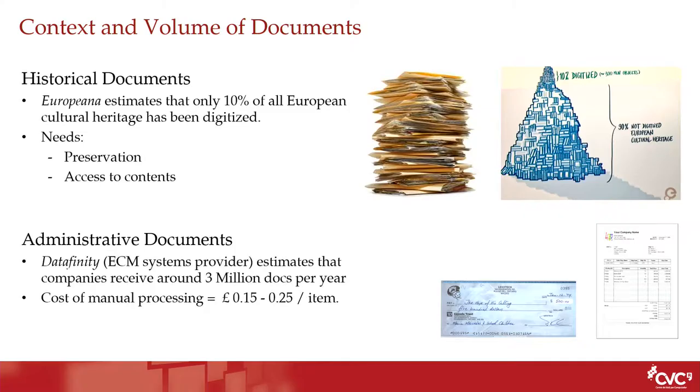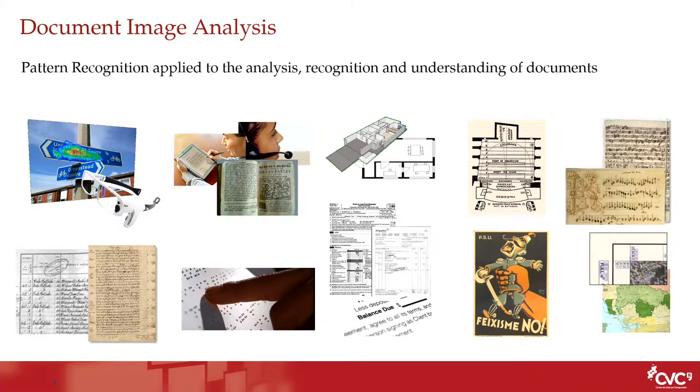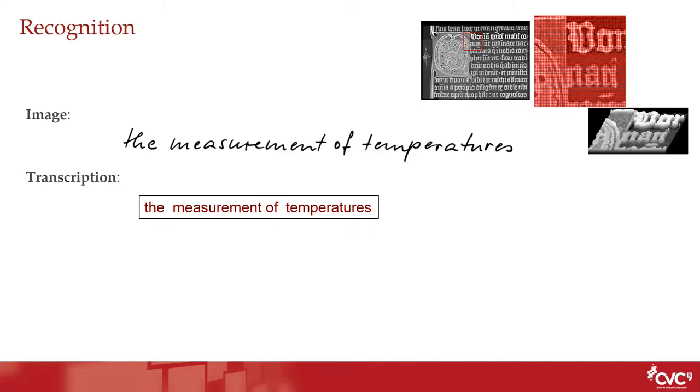Why documents? Because there are huge amounts of collections, historical and also modern. Even companies right now receive millions of documents every year. Talking about documents, I mean any kind of document or even reading in real scenes. For a machine, a document is just an image — a matrix of pixels. What we have to do is interpret those pixels and extract the information behind them.